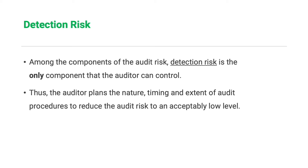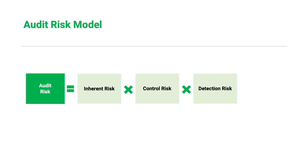As auditors, we plan the nature, timing, and extent of our audit procedures to reduce audit risk to an acceptably low level. The overall audit risk equals inherent risk times control risk times detection risk. This is known as the audit risk model, a tool used by auditors to understand the relationship among the various components of risk arising from an audit engagement.